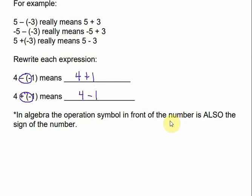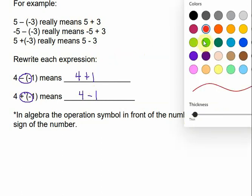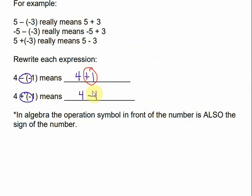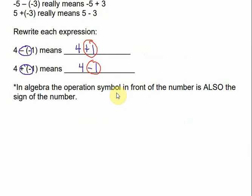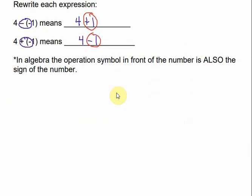In algebra, the operation symbol in front of the number is also the sign of the number. So if we look at these numbers and want to know the sign, this is a positive one and this is a negative one. The operation symbol is the same as the sign of the number.